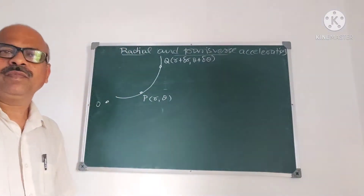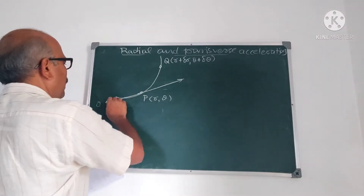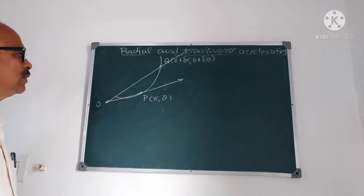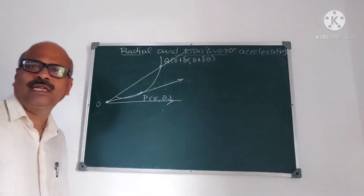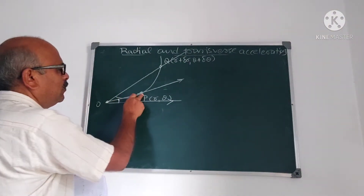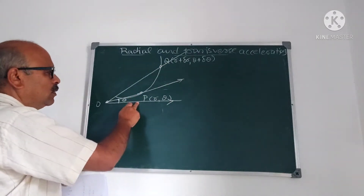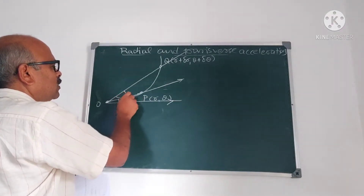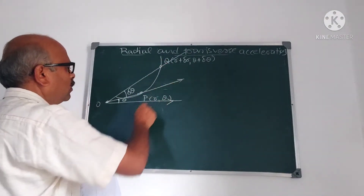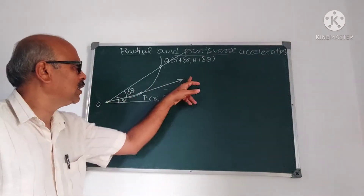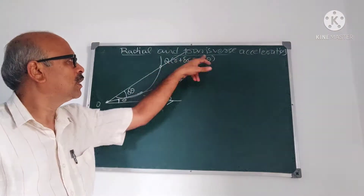Radial acceleration means the component of acceleration along the radius vector. OP is R and OQ is R plus delta R. This is the fixed initial line. By definition of coordinates, P has coordinates (R, theta), and Q has coordinates (R plus delta R, theta plus delta theta), meaning the angle made by OQ with the initial line is theta plus delta theta, so this angle is delta theta. Component of acceleration along OP is called radial acceleration, and perpendicular to OP is called transverse acceleration.